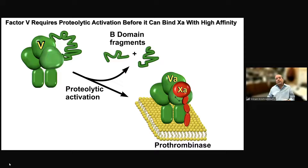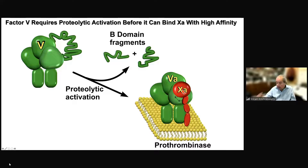The enzyme complex is composed of Factor Xa bound to a cofactor, 5a, on membranes containing phosphatidylserine. The binding interaction of the cofactor with the protease greatly increases catalytic function. Just like Factor Xa circulates as an inactive precursor, Factor 5a also circulates as an inactive procofactor — a large polypeptide chain with a dispensable central B domain that's about half the length of the molecule. This B domain is proteolyzed and released, converting Factor 5 to a 10a-binding protein that functions as a cofactor.